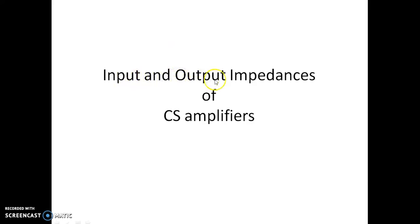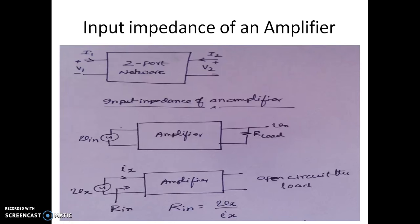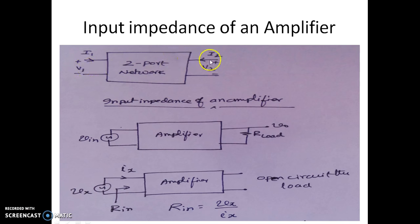In this video we shall see the input and output impedances of CS amplifiers. This is the input impedance of an amplifier. Let us consider a two-port network, having port number 1 as the input port with incoming current I1, input voltage V1, current I2 going inside, and V2 as the output voltage. The amplifier is a two-port network.